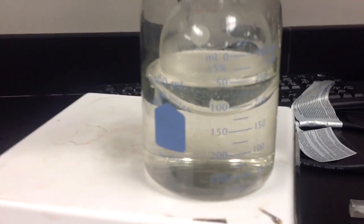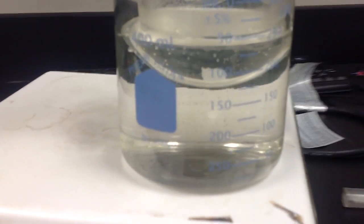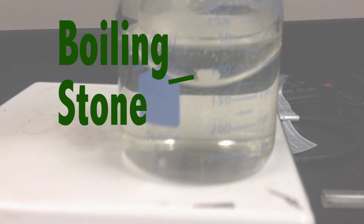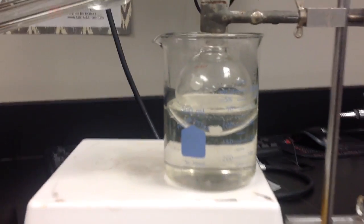For distillation, we need to heat the flask, so here you can see it submerged in a hot water bath. We've also added something called a boiling stone to the flask. This small stone gives bubbles a place to form when the mixture is heated.